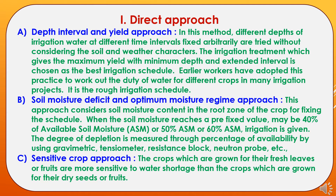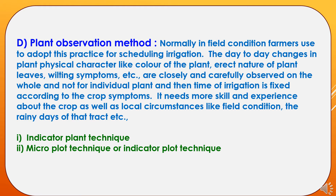The second approach is the soil moisture deficit and optimum moisture regime approach. This considers soil moisture content in the root zone of the crop for fixing the schedule. When soil moisture reaches a pre-fixed value — 40%, 50%, or 60% of available soil moisture — irrigation is given. The degree of depletion is measured using gravimetric, tensiometer, resistance block, or neutron probe methods. The third approach is the sensitive crop approach: crops grown for fresh leaves or fruits are more sensitive to water shortage than crops grown for dry seed or fruits.